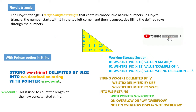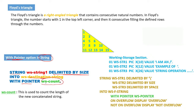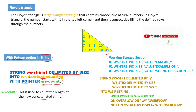Before going into the COBOL program for writing the fluid triangle, we must be aware of some aspects. We have the WITH POINTER option in the STRING statement. The STRING statement concatenates multiple strings using a delimiter into a final string, and WITH POINTER tells you how many bytes have already been stored into the final string — that is, the length of the new concatenated final string.